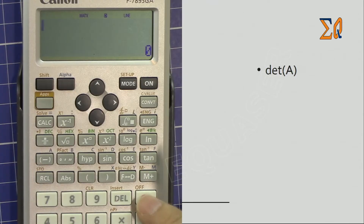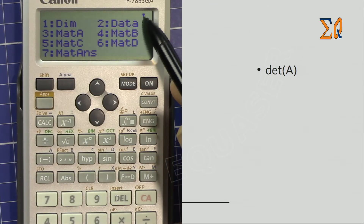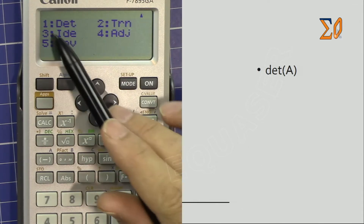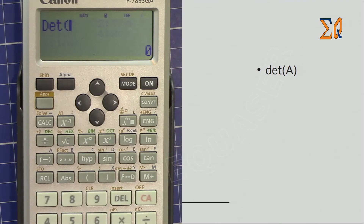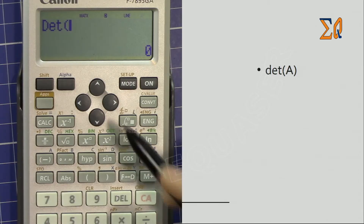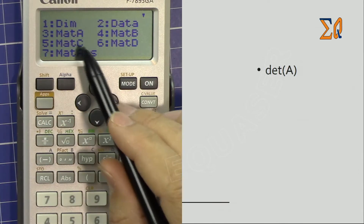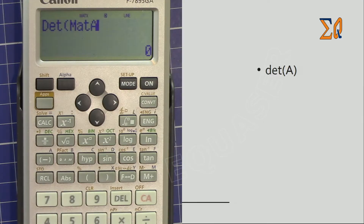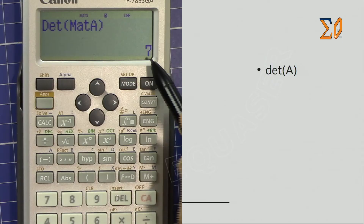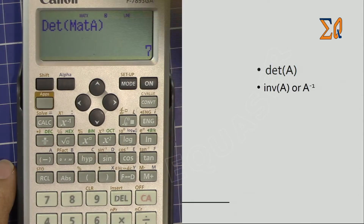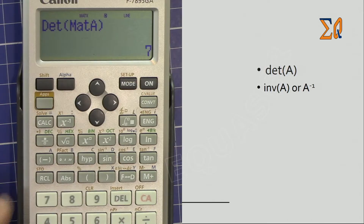To find the determinant of matrix A, press clear all and go to Apps. Use the down arrow to go one screen lower. Number one is determinant. Then bring matrix A by pressing Apps and number three, and close the parenthesis. Press equal — the determinant of a matrix is a single number.